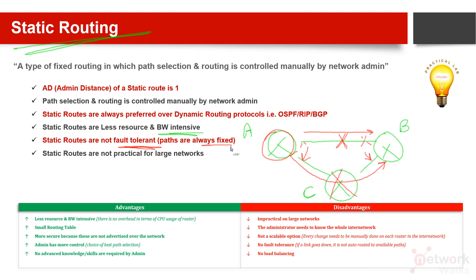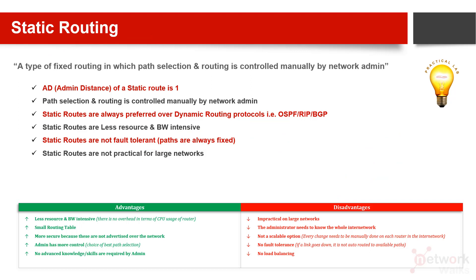Static routes are not practical for large networks. ISPs like Vodafone, MTN, British Telecom, Bharti Telecom, Telenor, and AT&T seldom use static routes, especially on their main networks. They might be used in remote areas for small separate networks, but on the main network they are never used. Static routing is practical only for small networks.